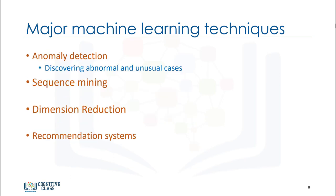Anomaly detection is used to discover abnormal and unusual cases. For example, it is used for credit card fraud detection. Sequence mining is used for predicting the next event, for instance, the click stream and websites.